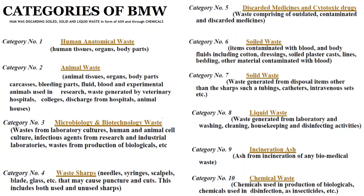Category 9 is incineration ash — the ash produced from incineration of any biomedical waste, which is a type of biomedical waste disposal. Category 10 is chemical waste — chemicals used in the production of biological products, disinfection, insecticides, etc.